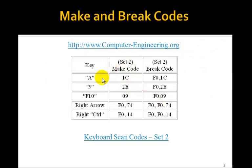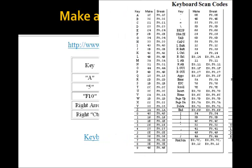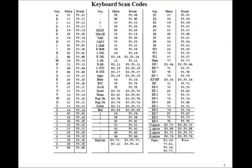In addition to the make code, there's also a break code — that's a code that gets sent when you release the key. So if you press key A, the keyboard sends a 1C out the PS2 port, and when you release it, it sends an F01C. So break codes begin with an F0. The two-byte make code E074, when you release the key, three bytes get sent: E0, F0, 74.